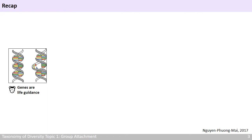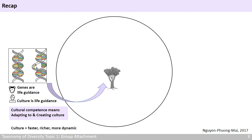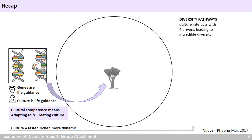Let's start with a recap of what we have learned so far. For animals, genes are their life guidance, telling them what to eat, when to hunt, and how to survive. For humans, culture is our life guidance — it tells us what to eat, when to say yes, when to say no, and how to get things done. That's why cultural competence means the ability to adapt to and create a culture. Culture is faster, richer, and more dynamic than genes. Culture interacts with four drivers, leading to incredible diversity around us.